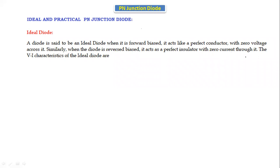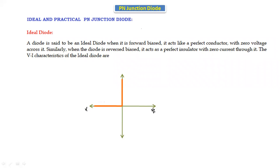If you see the VI characteristics of the ideal diode, on the x-axis we take the forward voltage, and on the other side it is the reverse voltage. In the ideal diode, the diode starts conducting from zero position only, so from this we can say that the cut-in voltage of the ideal diode is zero.